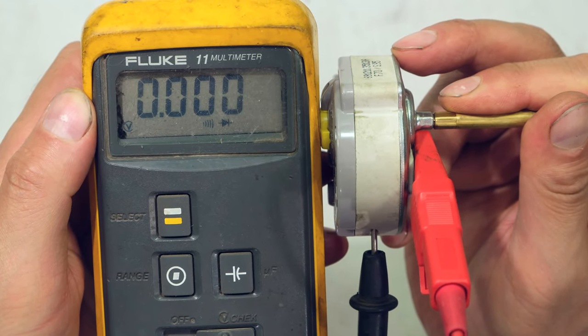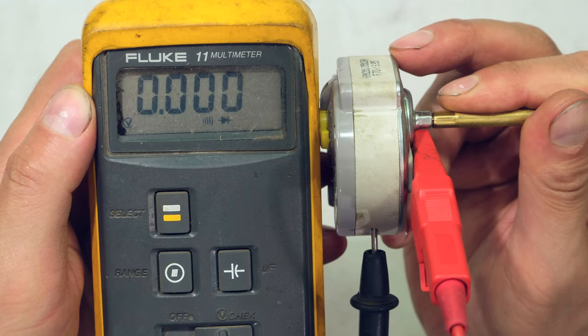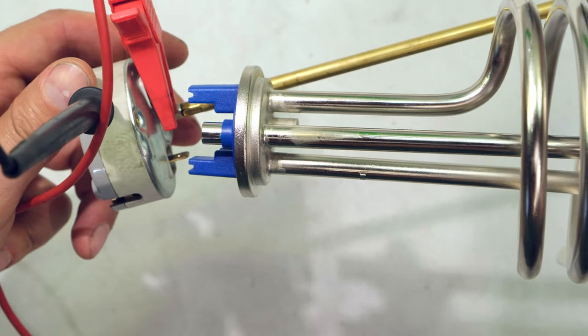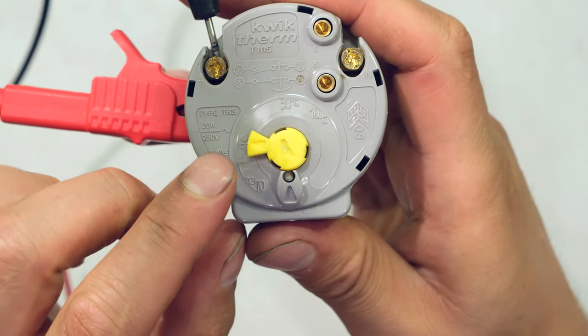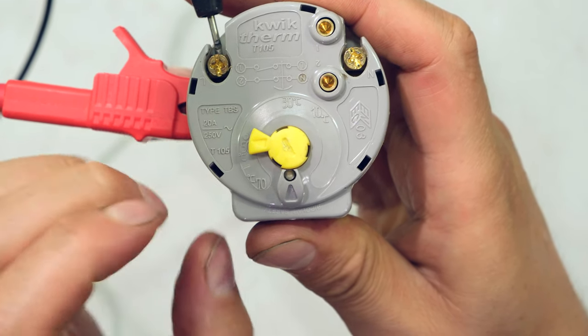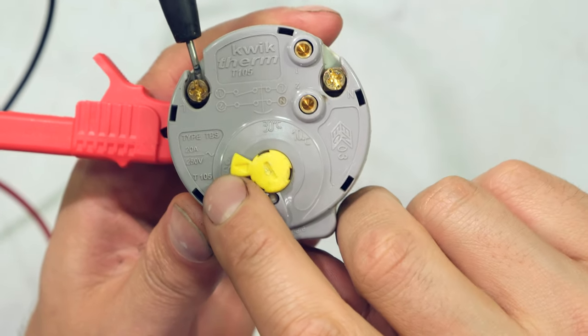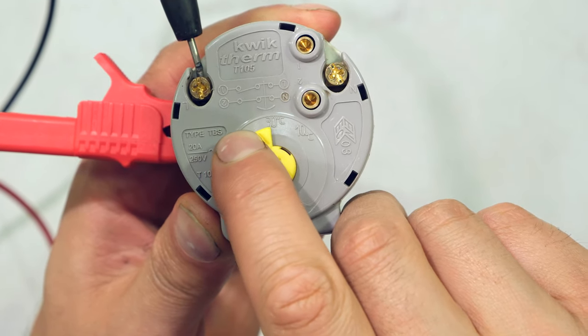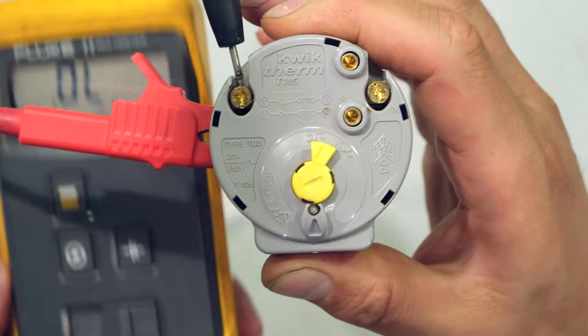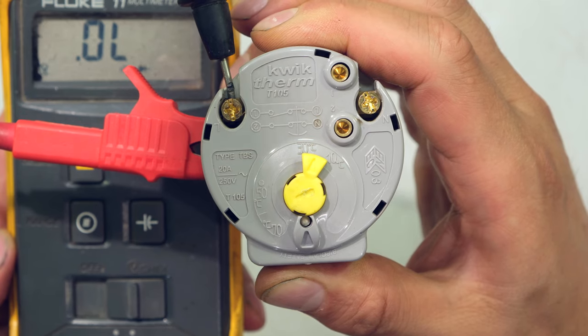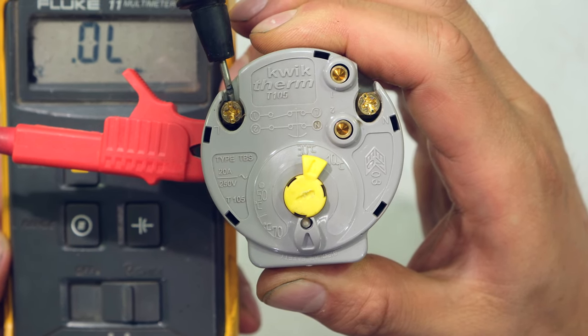That would mean that current would be flowing through this element. The reason why is because it's set to 50 degrees and the room temperature here is only about 22 degrees. If I reduce this below about 20 degrees, my meter stops making that noise and it's telling me it's an open circuit. An open circuit is now telling me that the thermostat is not going to allow current to flow.